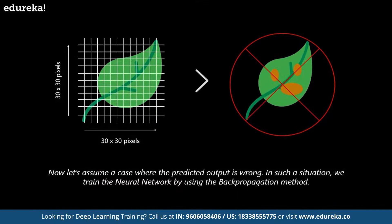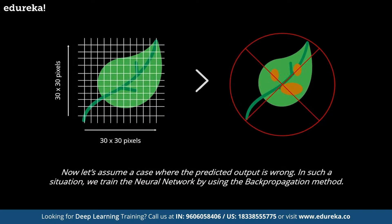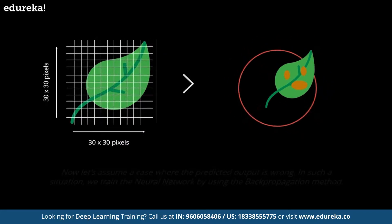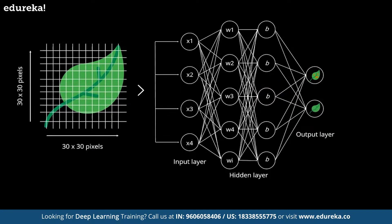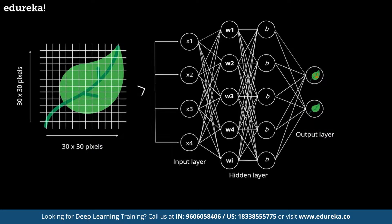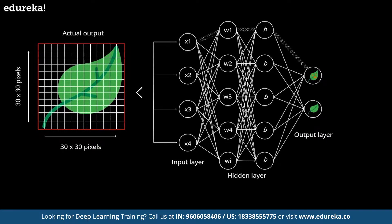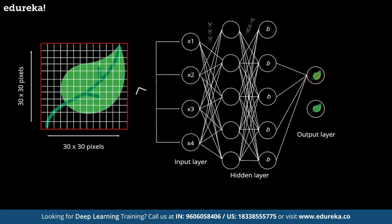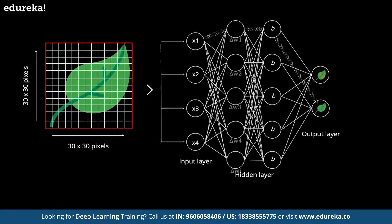Now let's assume a case where the predicted output is wrong. In such a situation, we train the neural network using the back propagation method. Initially, while designing the neural network, we initialize weights to each input with some random values. These weights denote the importance of each input variable. Therefore, if we propagate backward in a neural network and compare the actual output to the predicted output, we can readjust the weights of each input in such a way that the error is minimized. This results in a more accurate output — and this is exactly what back propagation means.